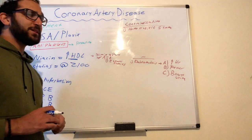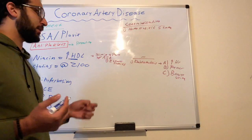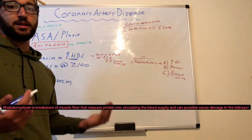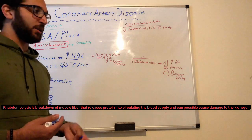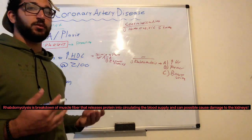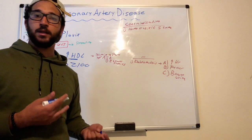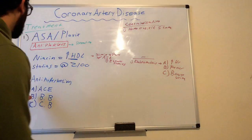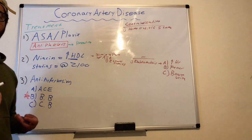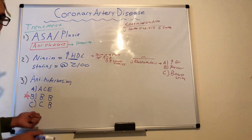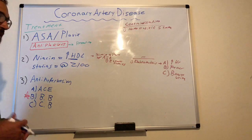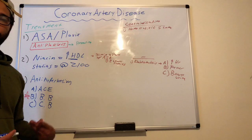A major contraindication of statins like atorvastatin — if not metabolized correctly — is rhabdomyolysis. The classic triad of symptoms for rhabdomyolysis is increased heart rate, fever, and brown urine. Be very mindful of these contraindications. The third line of medications is antihypertensives. If the patient is already taking them, that's great. Beta blockers are the preferred route to help with vasodilation and open up the coronary arteries. Calcium channel blockers are also useful for smooth muscle relaxation and vasodilation.